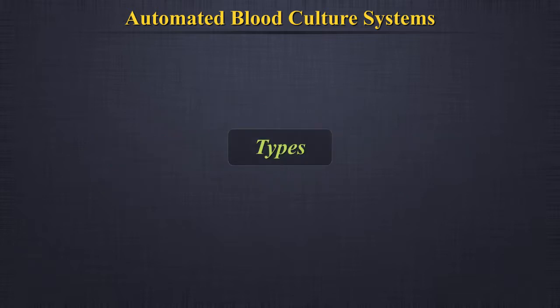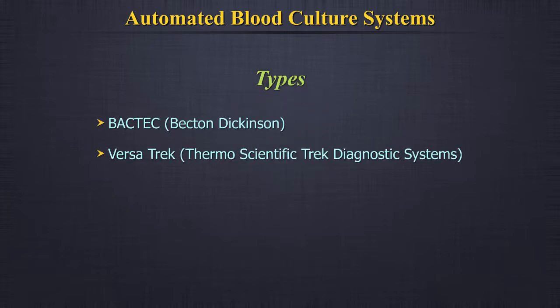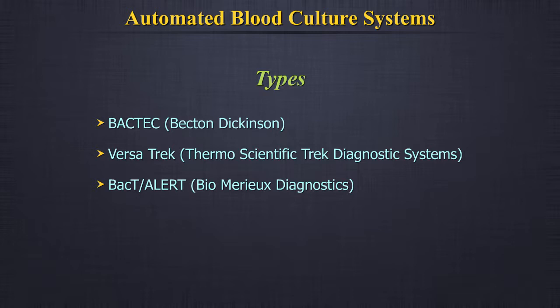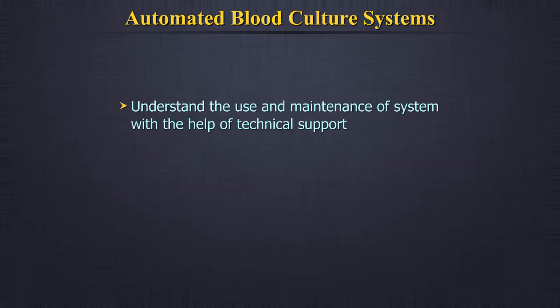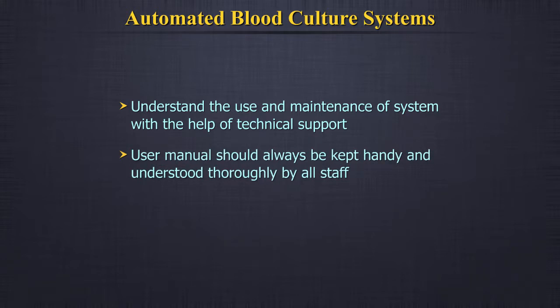Types. Three such systems are currently available: the BacT/Alert, the VersaTREK, and the Bactec. Different labs can use different automated blood culture systems. It is important to understand the use and maintenance of your system with the help of technical support. The user manual should always be kept handy and understood thoroughly by all staff who handle the instrument. For details on maintenance, please refer to the training module on equipment management.